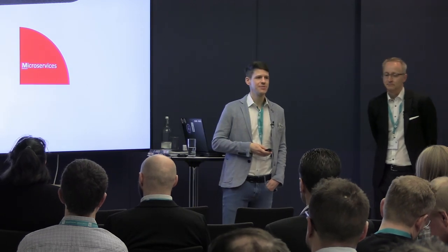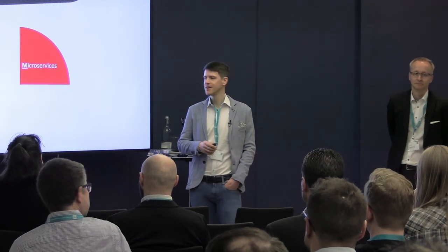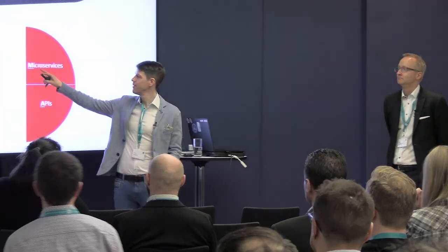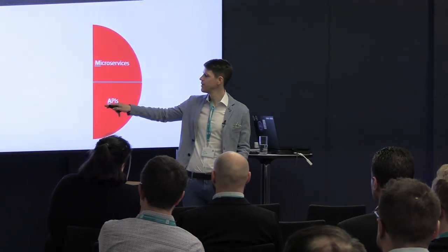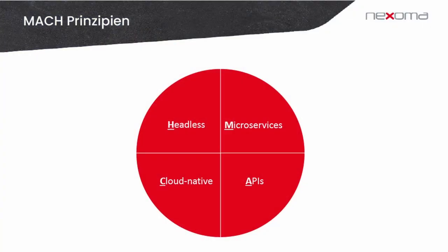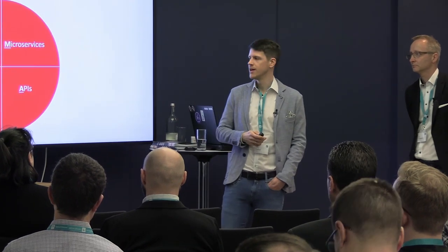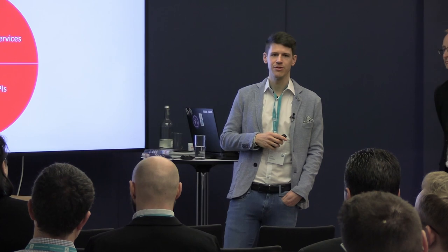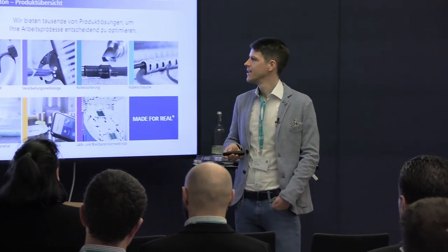So what are the MACH principles? MACH means: M like Microservices, A like API, C like Cloud-native, and H like Headless. What we understand by each will be explained in a moment, because we always provide examples to make it more graspable — otherwise it is very technical.